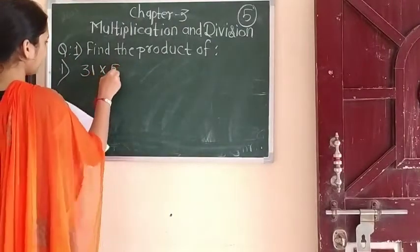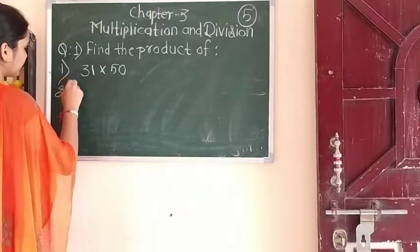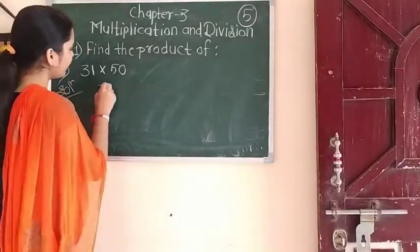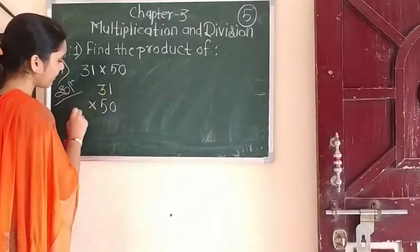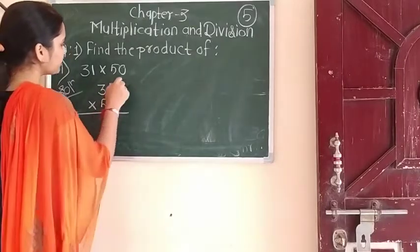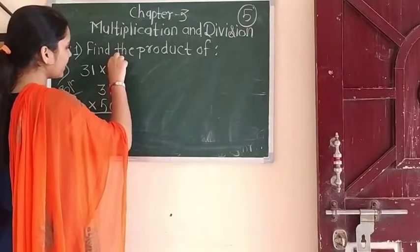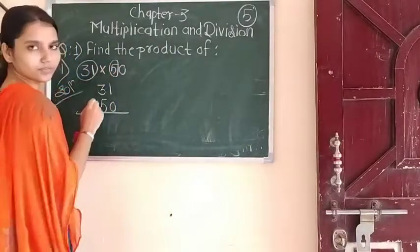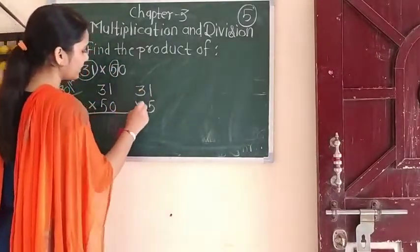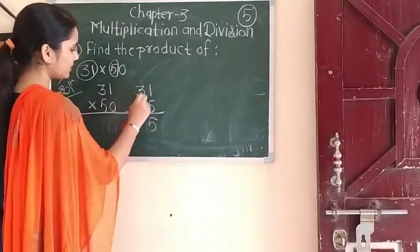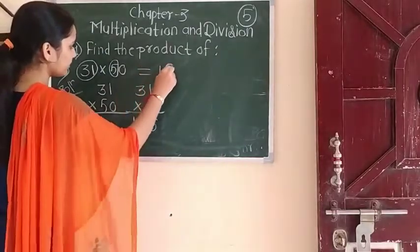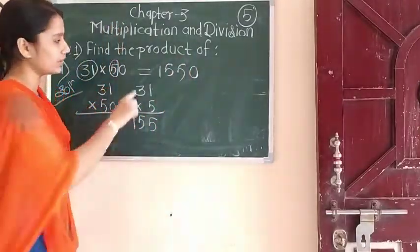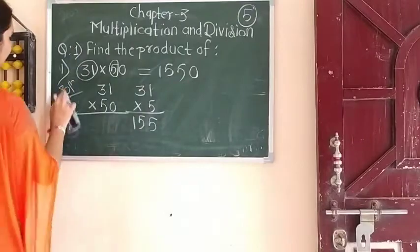First is 31 multiplied by 15. So how to solve this? We have to make our solution easy. When one number has a 0 after it, don't write it as it is. Just multiply 5 by 31: 5 ones are 5, 5 threes are 15. So the answer is 155. Then count how many zeros are there — 1 zero — so write one 0. That gives your answer: 310. In this way you have to solve.